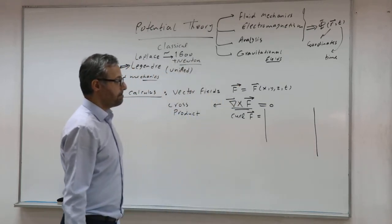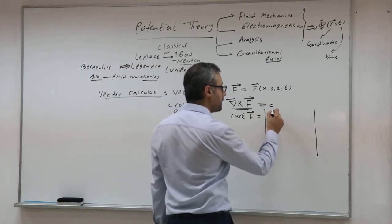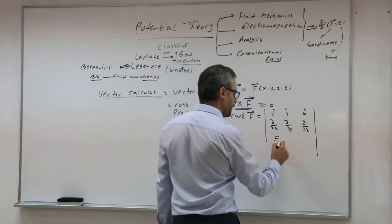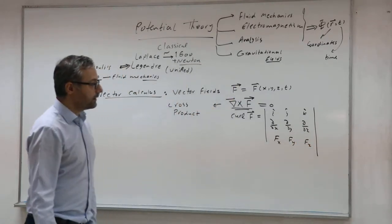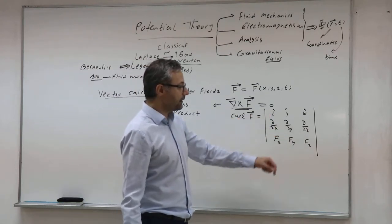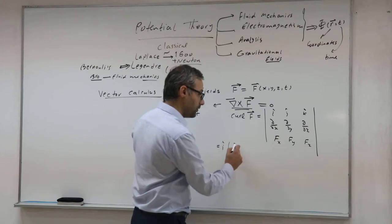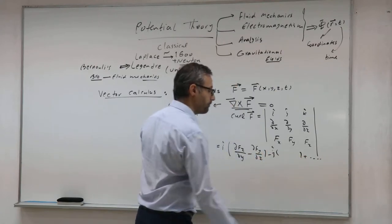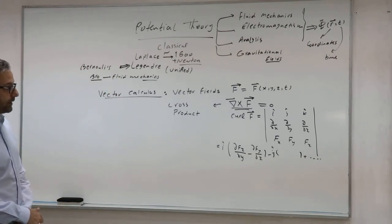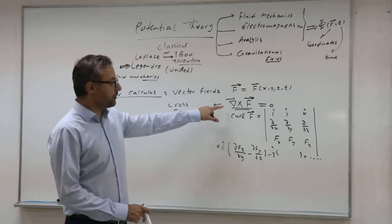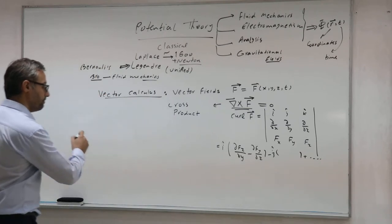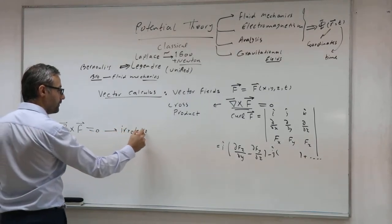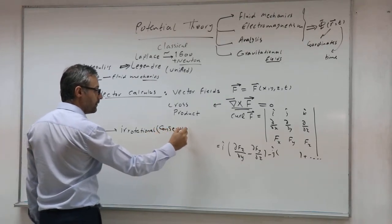If you focus on the normal Cartesian coordinates, there is an easy way to find the components of the curl vector. The way is to calculate the determinant. By the elementary row operations, you can calculate the determinant and find the components of the curl vector — the minus J and X components, plus others. So potential theory started from this equation: which vector fields have curl equal to zero? We are looking for vector fields where the curl is zero. These vector fields are called irrotational or conserved vector fields.